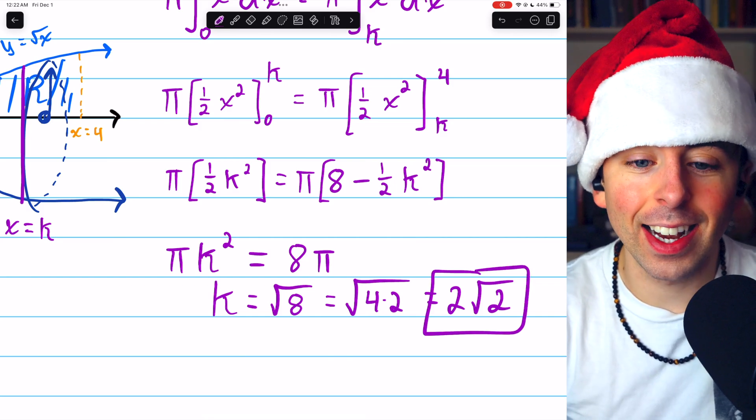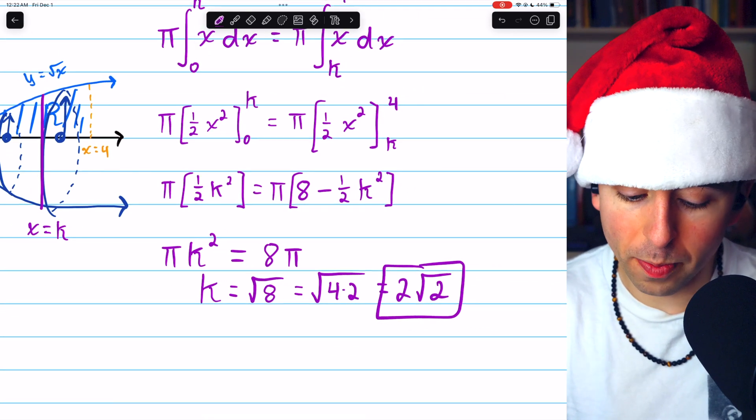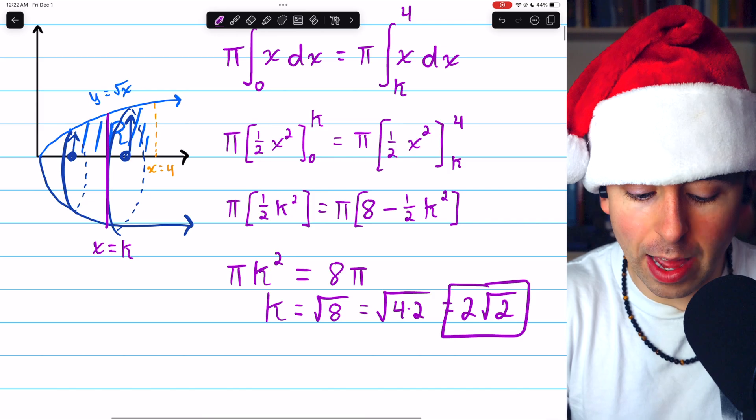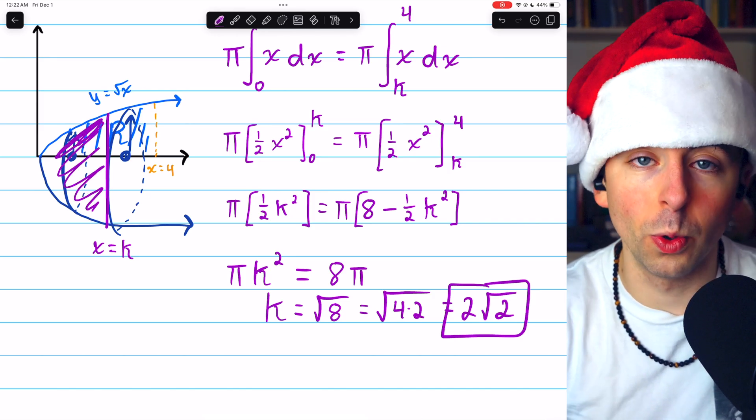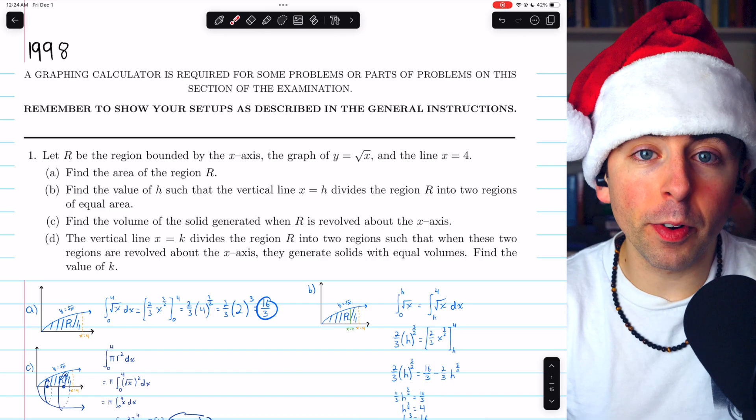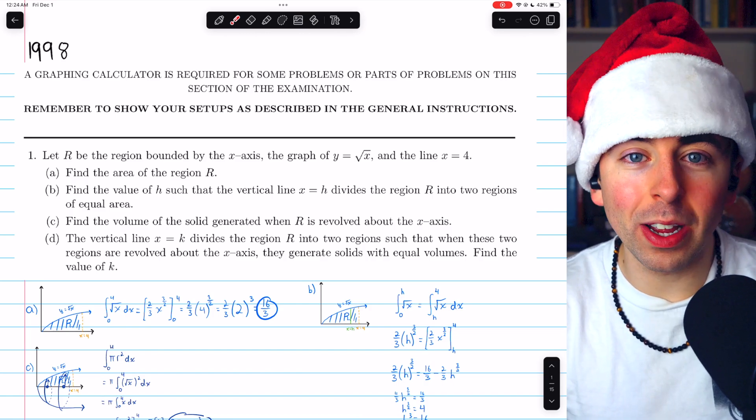If we were to draw the vertical line X equals 2 root 2, the volume of the solid to the left would be the same as the volume of the solid to the right. And that's it for our first AP Calculus free response question of the month.